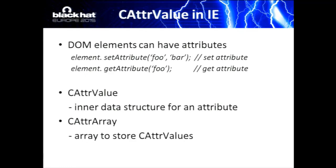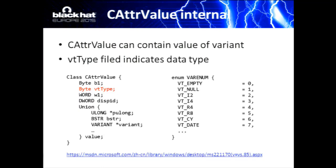What is a CAttribute value? The DOM element in HTML can have attributes. You can set attributes to a DOM element using JavaScript by calling the function setAttribute. CAttribute value is an underlying data structure that stores an attribute. CAttribute array, as its name indicates, is an object that can contain an array of many CAttribute values. We need to go a little deeper into CAttribute value and CAttribute array for better understanding of the exploit process.